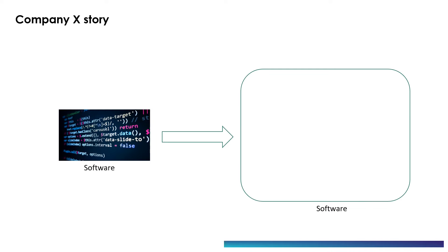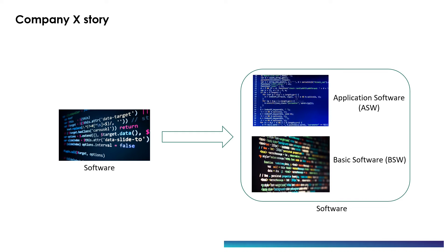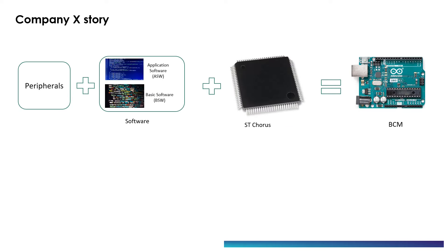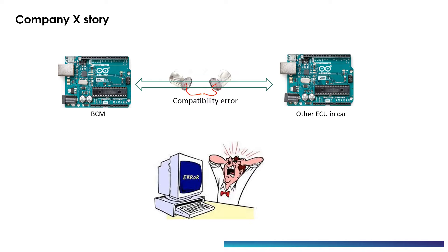The previous software was so dependent on the controller specifics that they cannot reuse it anymore. So this time, company X decides to write the software in two parts: a BSW layer which controls the hardware and provides system functionalities, and an ASW layer where the application for the BCM is written. When they test the software in standalone mode it works, but when they test it with other modules in the car it doesn't work due to some compatibility issues.